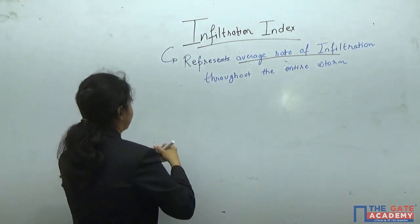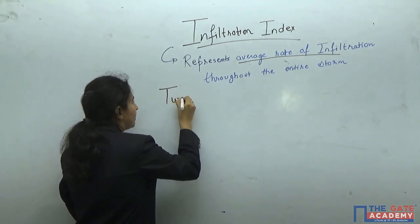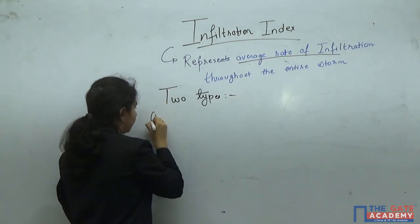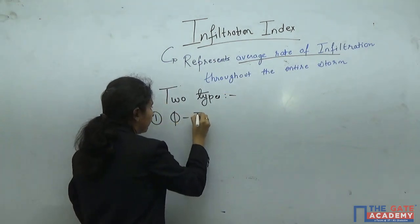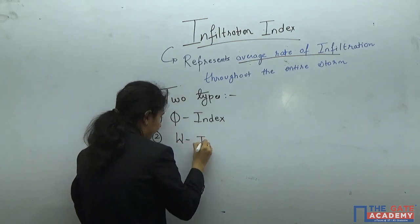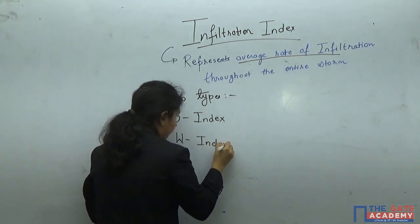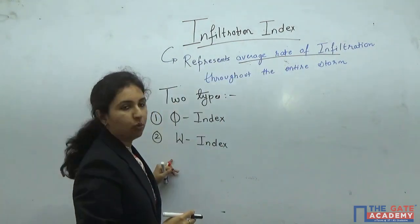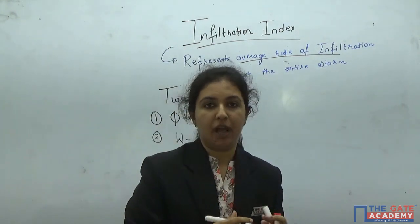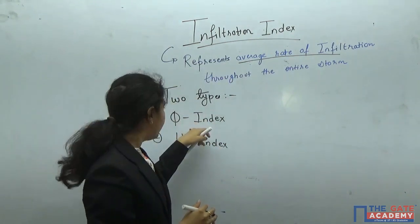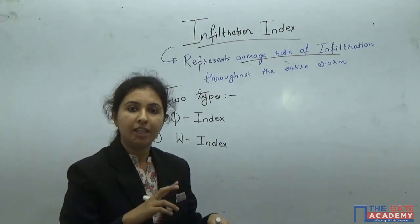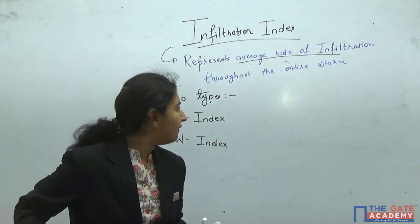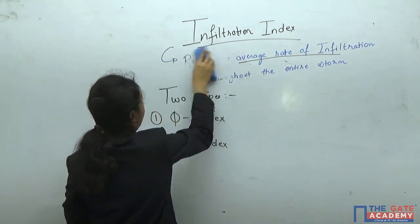There are two types of infiltration index. First is the Phi index and second is the W index. Both represent the average rate of infiltration. What is the difference between these two? I will explain it with an example — what Phi index means, what W index means, and why we define two index values.